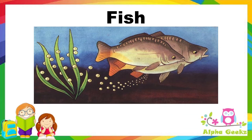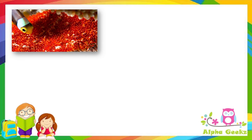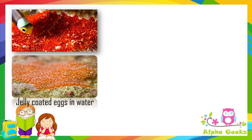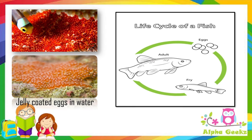Reproduction in fish: fish lay thousands of eggs at a time in water. Fish eggs do not have shells — they have a jelly around them to protect them from water. Only a few eggs grow into an adult fish, as many are eaten by predators. A baby fish is called a fry.